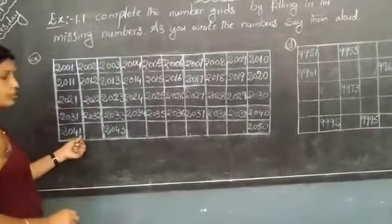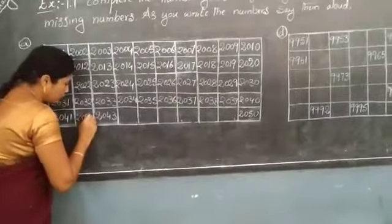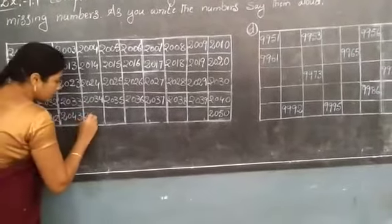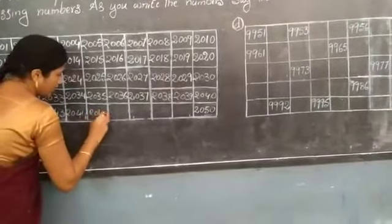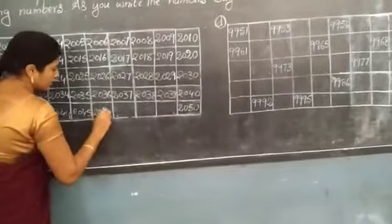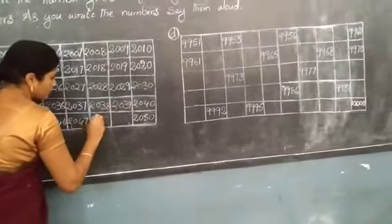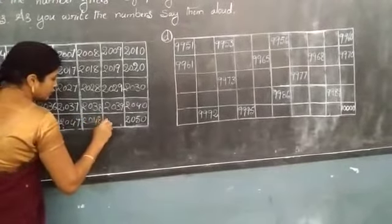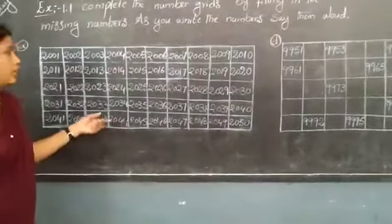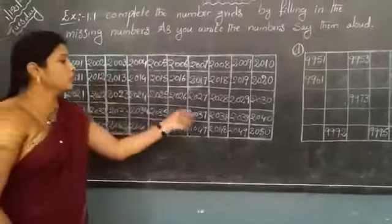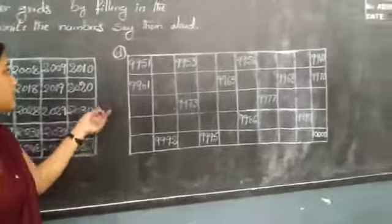Next, 2041 and 2042, 2043, 2044, 2045, 2046, and 2047, 2048, 2049, and 2050. These are the numbers from 2001 to 2050. Next, see the D question.